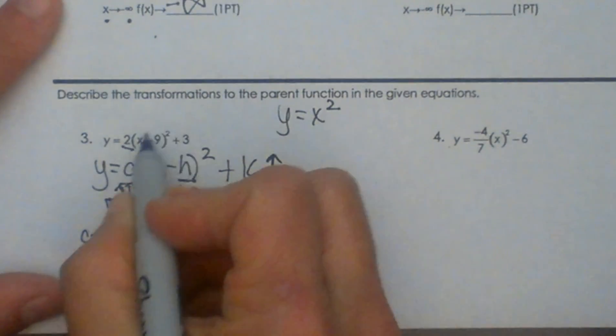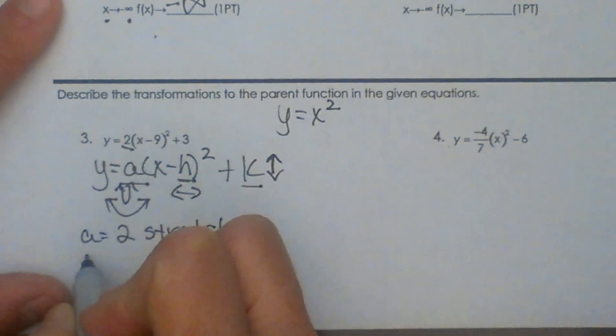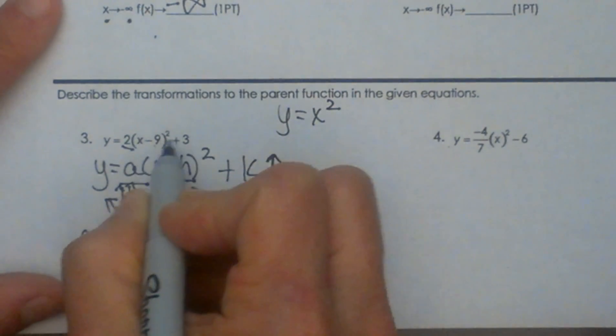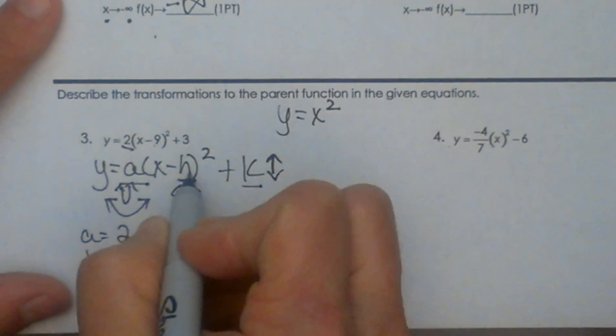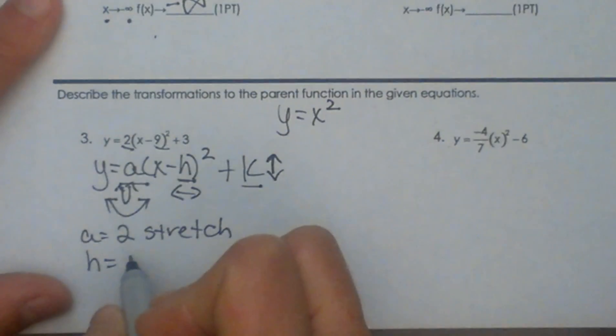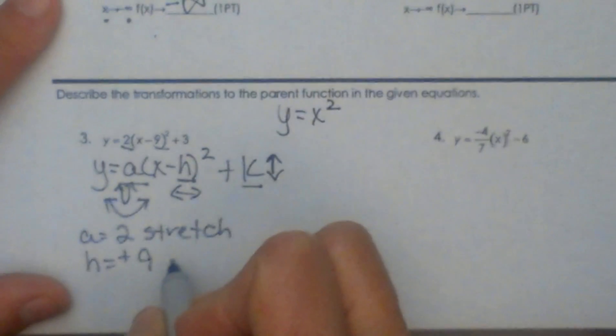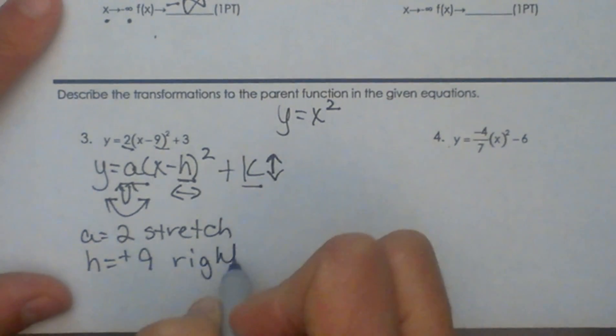Our h value is positive 9, even though it's got x minus 9. The equation is x minus h, so that means h must be positive 9, and that means it's got a horizontal shift of positive 9, which means it's moving to the right 9.